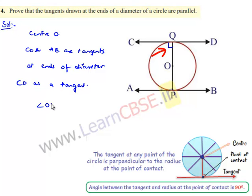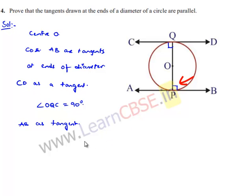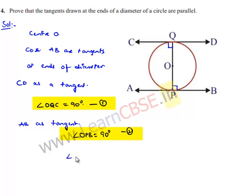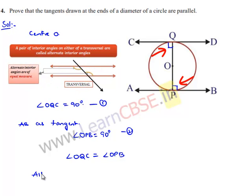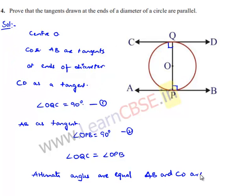Angle OQC = 90°. If we consider AB as a tangent at point P, AB subtends 90° with OP, so angle OPB = 90°. From these two results, angle OQC = angle OPB. Considering CD and AB as two lines with PQ as transversal, the alternate angles are equal. Therefore, lines AB and CD are parallel to each other.